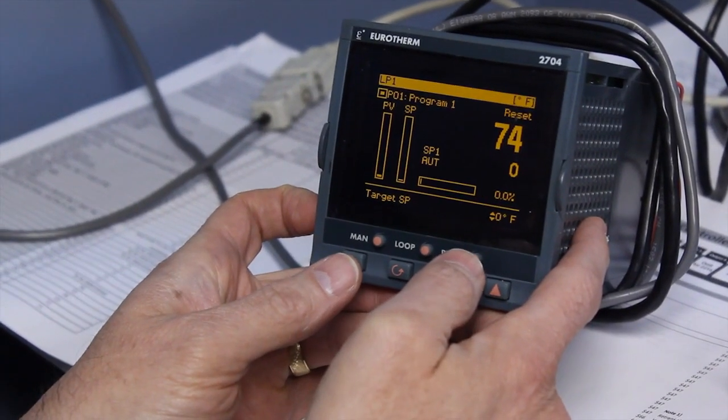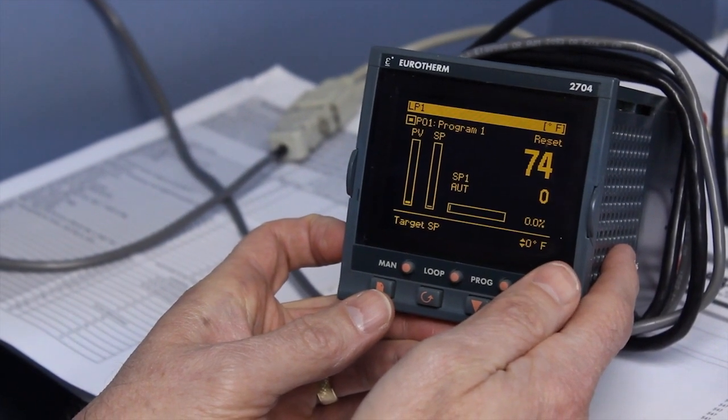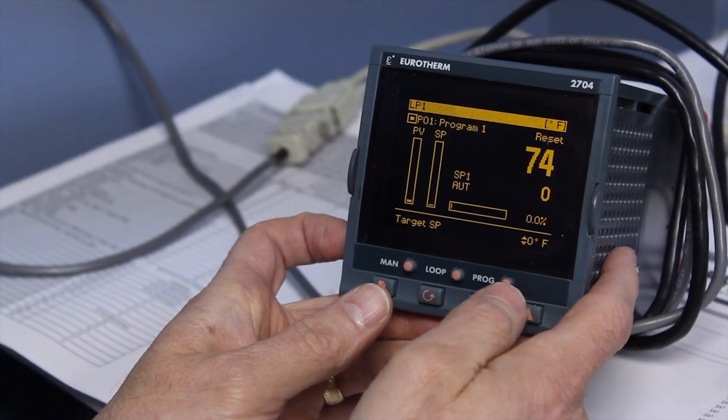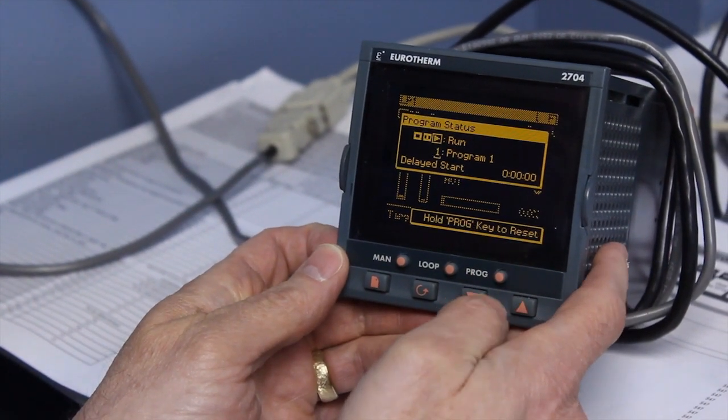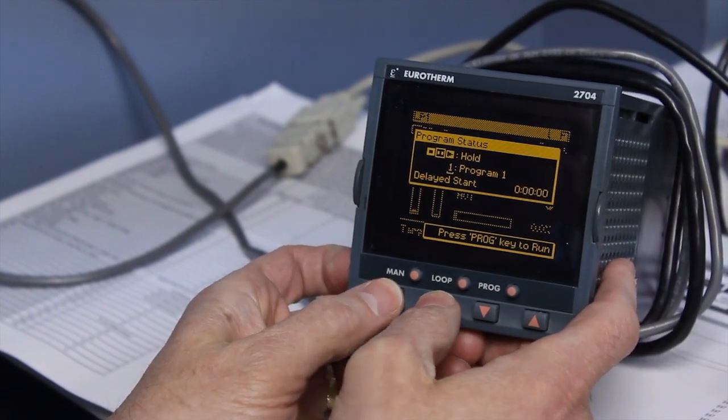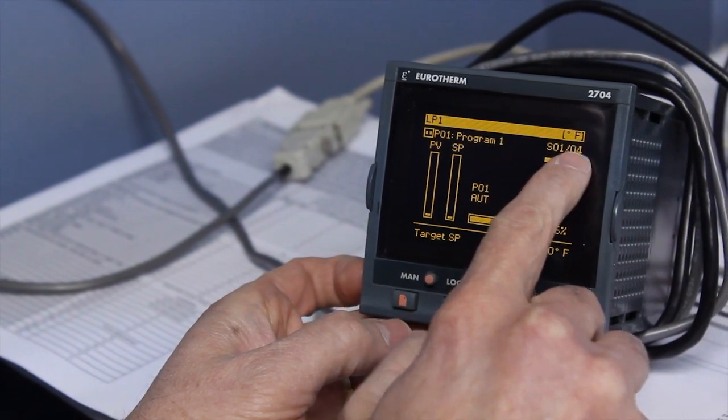This will show you how to advance a programmer to a future segment. First, we start the program into run. We put the program into hold. We notice we're in segment number one of four. This is just a test program.